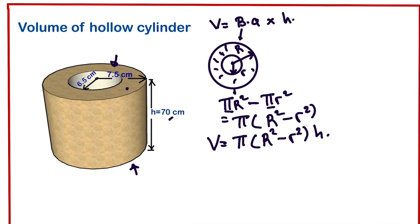Next, we just need to substitute the various values. V will be equals to π, which is 22/7, then R is 7.5 squared minus 6.5 squared, times the height which is 70.